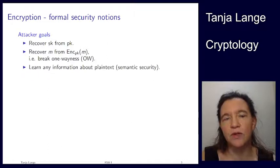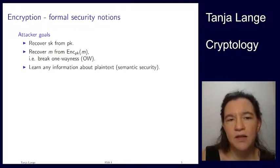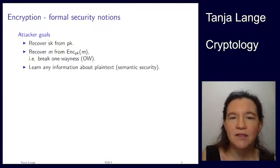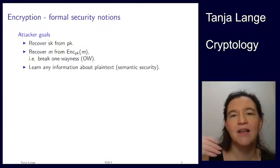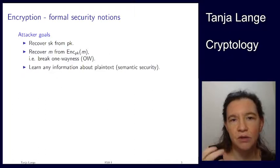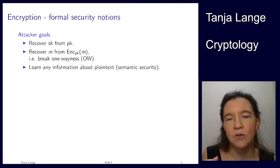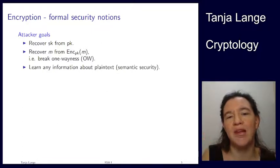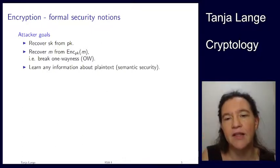The formal security notions for encryption: what does the attacker want to achieve, and what are the attacker's abilities? The attacker's goals are to recover the secret key from the public key. A weaker but still devastating goal is recovering a message from a ciphertext without getting the secret key — this is called one-wayness. And then there's the notion of not being able to learn anything about the plaintext given the ciphertext, which is called semantic security.